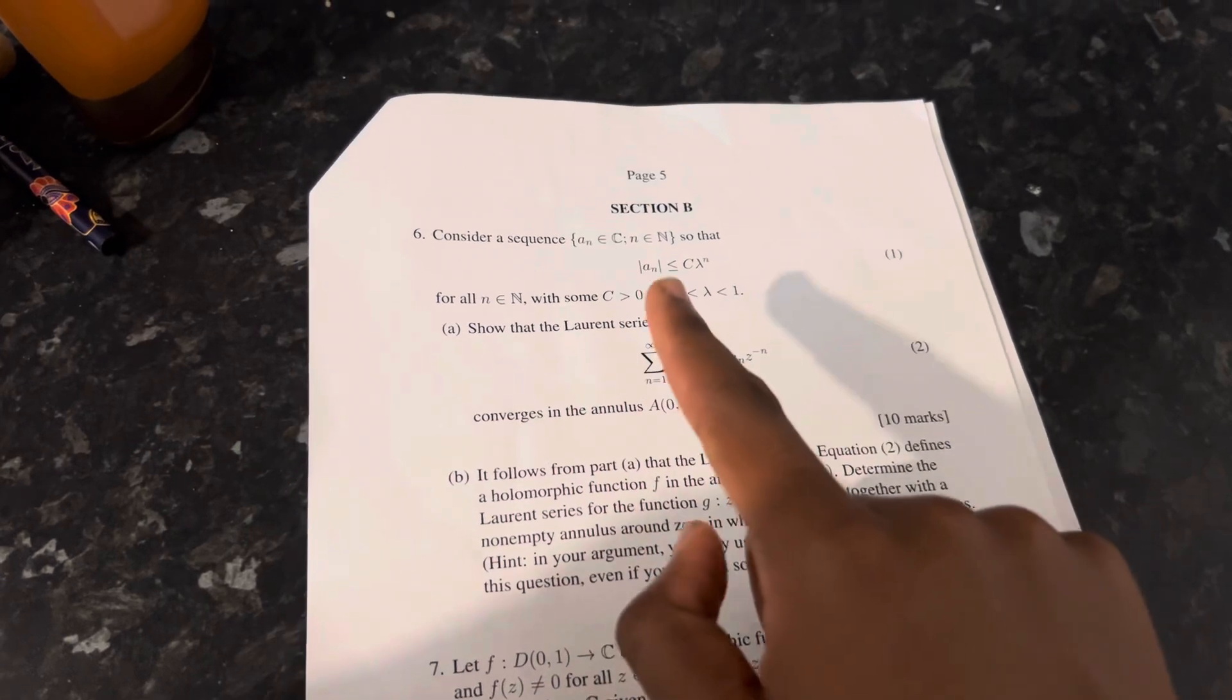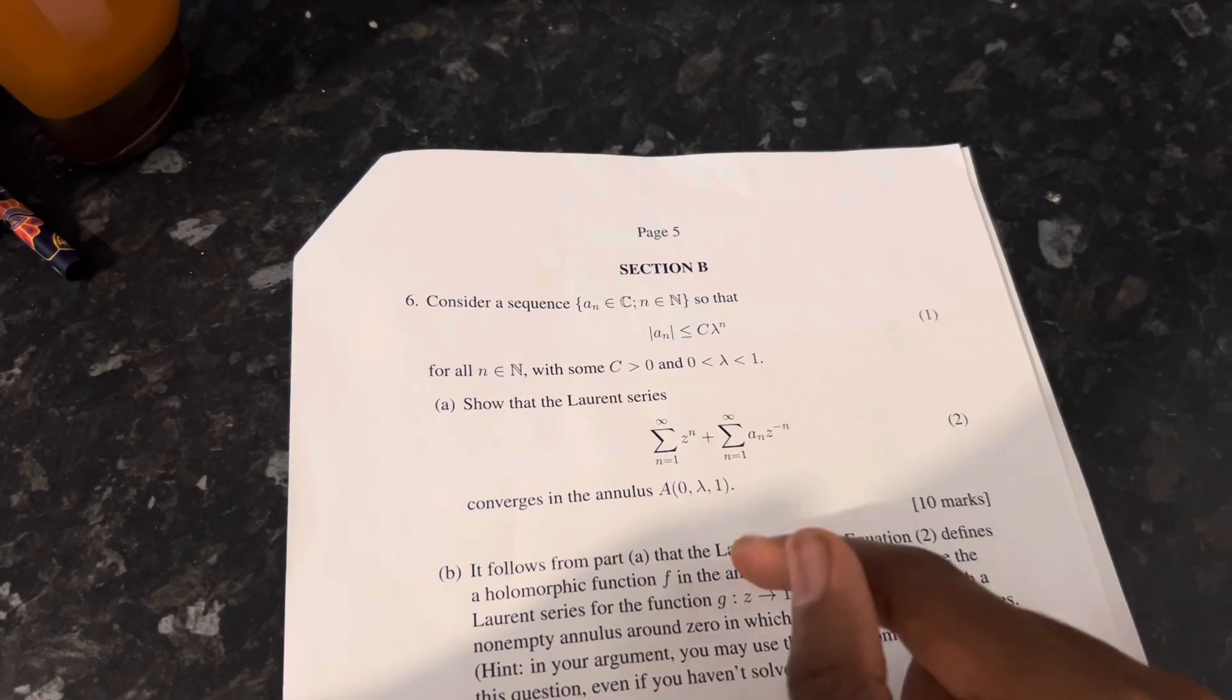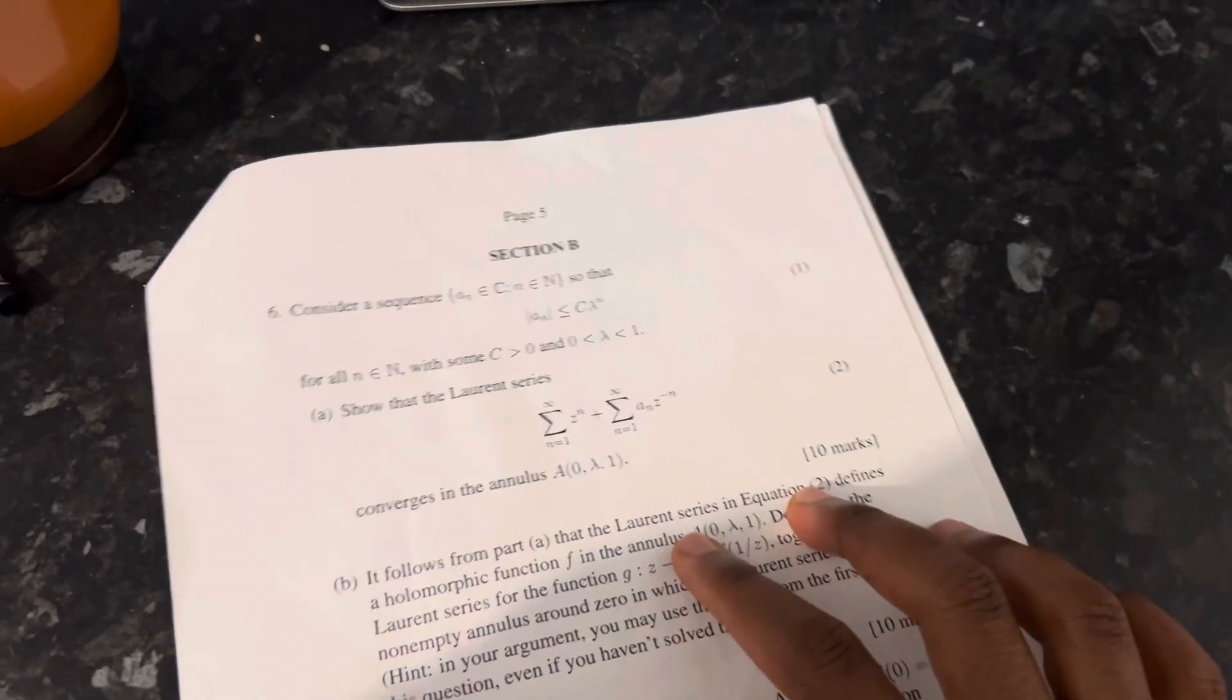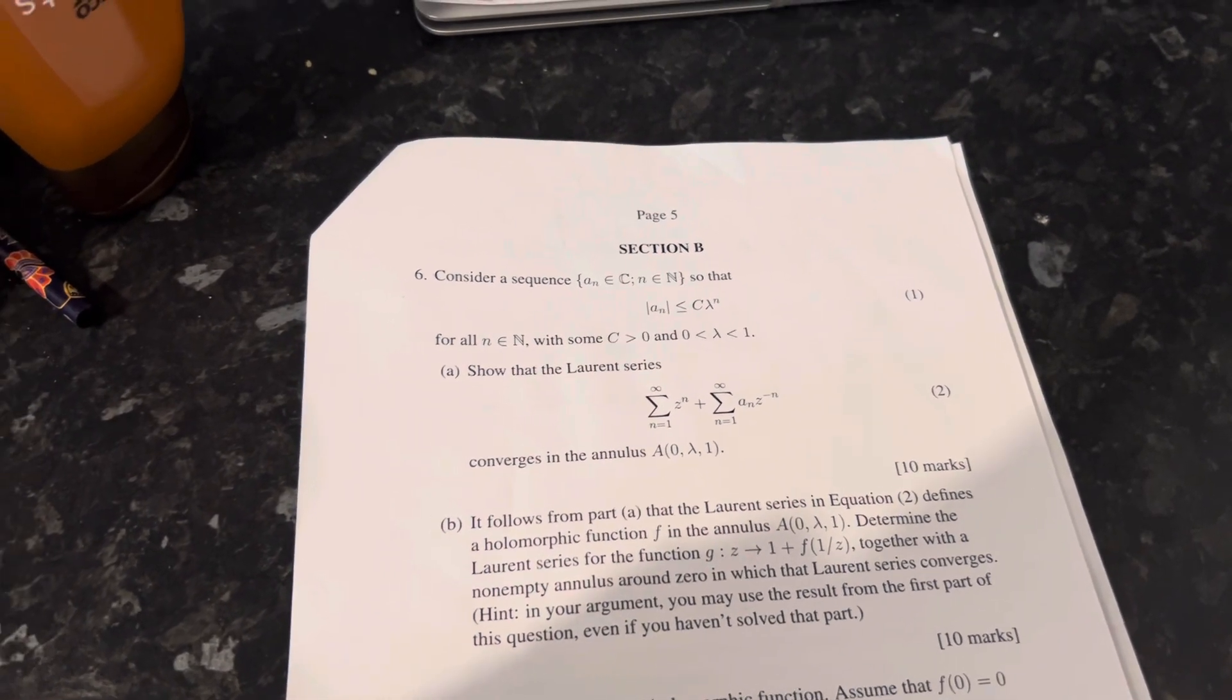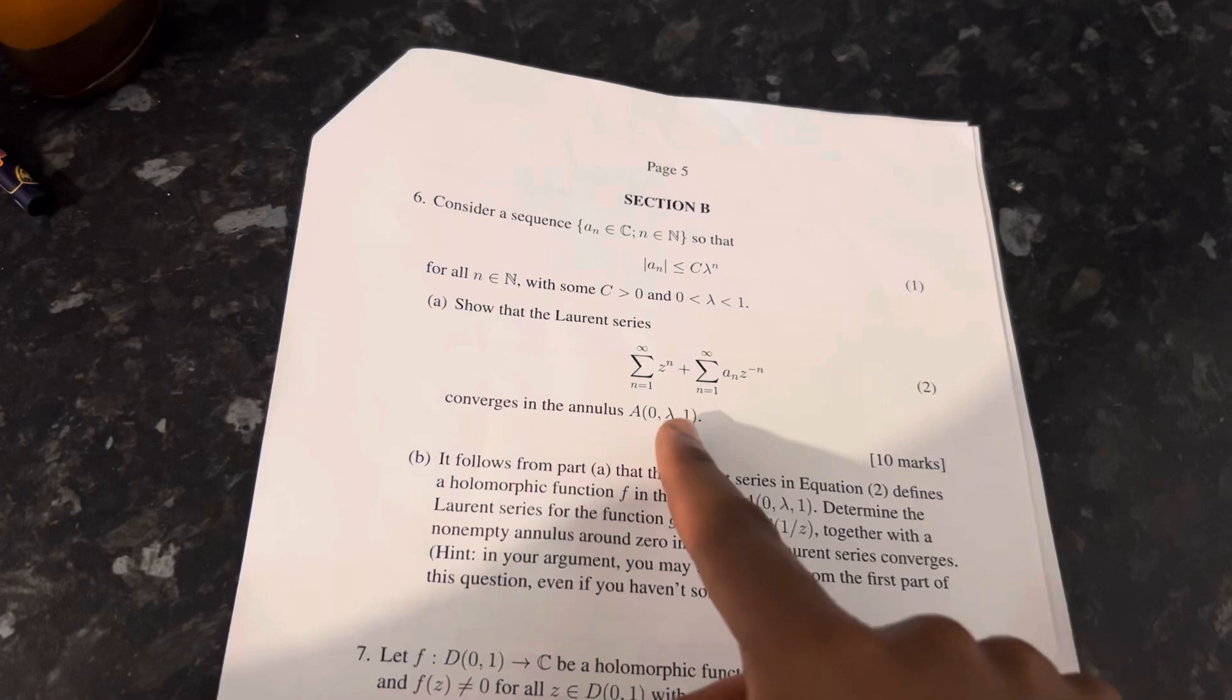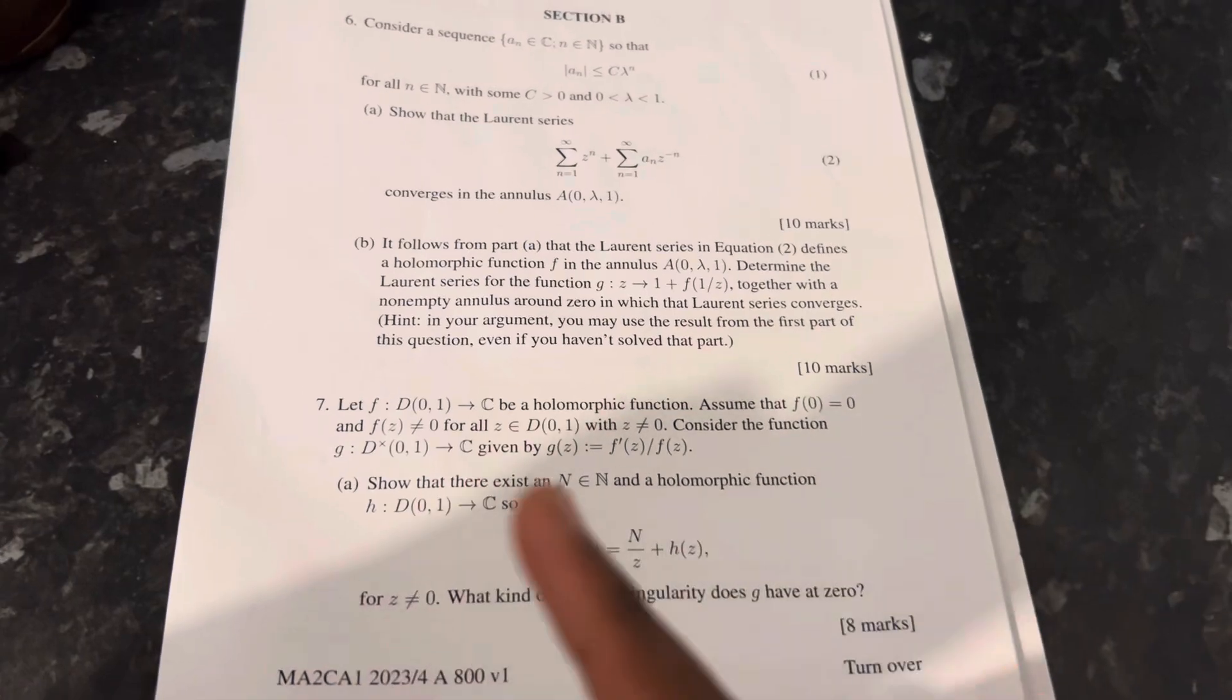This one was so amazing because a very similar question was on the second assignment. Instead of a lambda there, it was a three I want to say, and for that second assignment they did release solutions eventually. So yeah, the solution was in my mind basically anyway. This was fine, it's just subbing into there, a bit of rearranging and using the fact that the geometric series converges when mod of z is less than one. The annulus of convergence is effectively just the reciprocal of these numbers, so one over lambda and then just one.